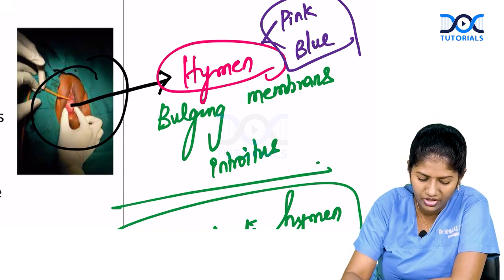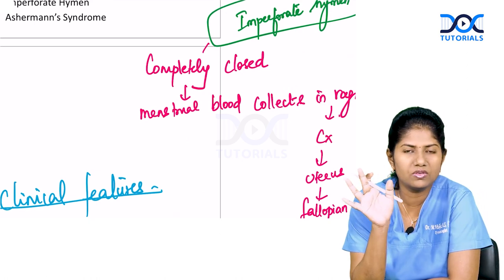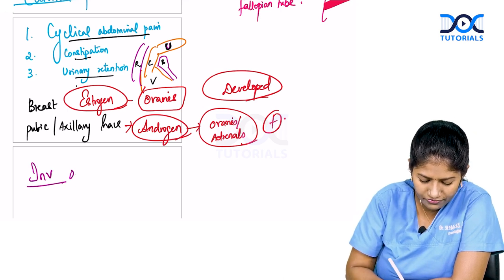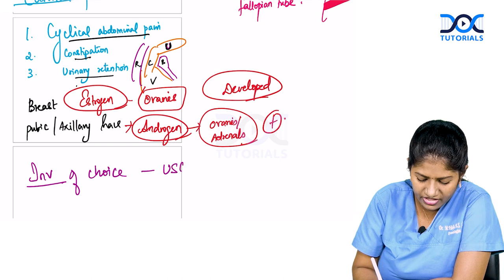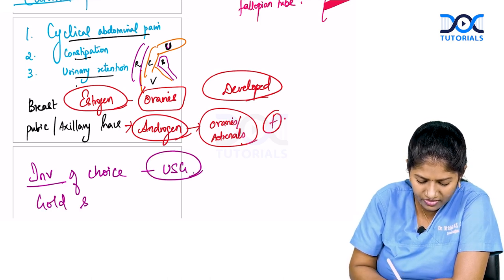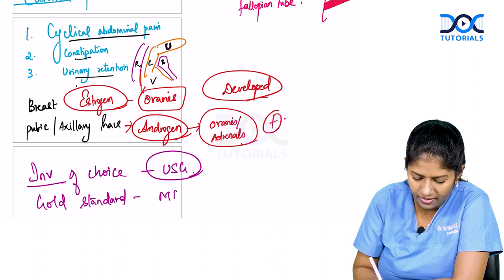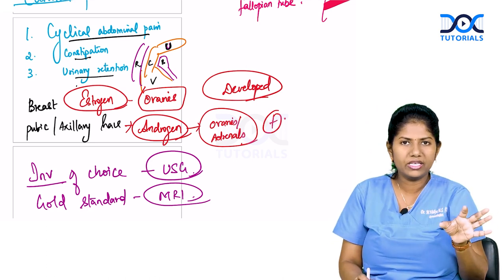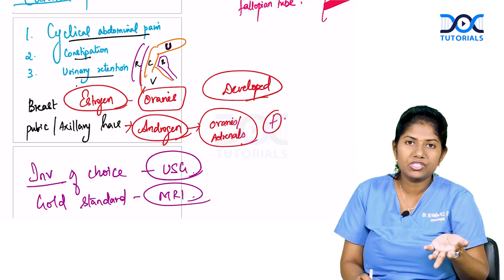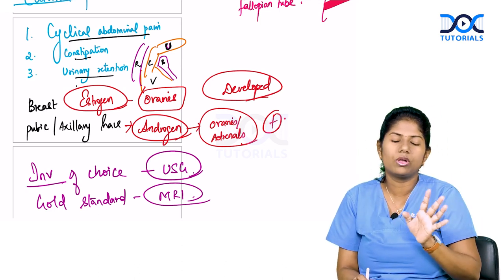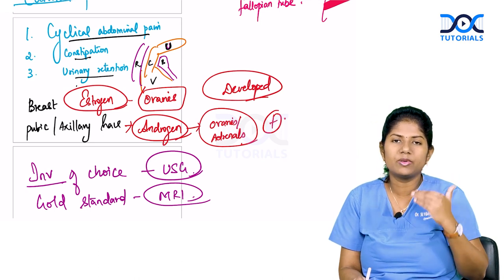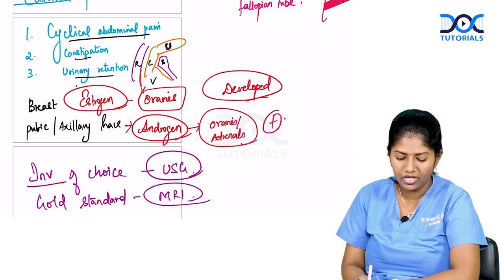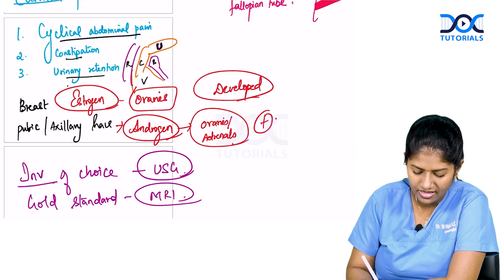Investigation of choice is ultrasound, but the gold standard investigation is MRI. MRI is preferred because imperforate hymen can be associated with renal and skeletal anomalies, and MRI can diagnose cryptomenorrhea as well as other associated anomalies. Cryptomenorrhea means hidden menses — 'crypto' means hidden and 'menorrhea' means menses.